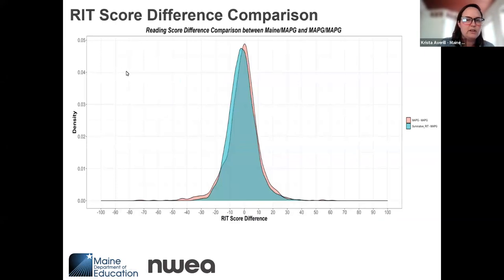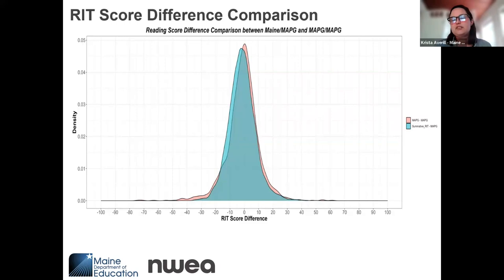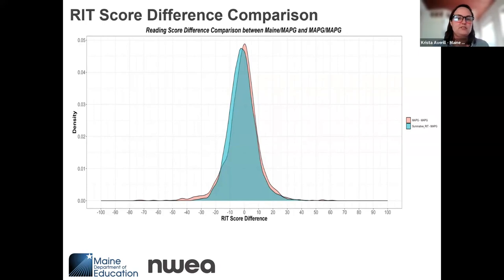Here is information shared by NWEA: a RIT score difference comparison for reading between students who took MAP Growth twice versus students who took both the Three-Year Assessment and MAP Growth. The pink bell curve — partially hidden behind the blue — shows differences for students taking MAP Growth twice, based on national data from 6.7 million students. The blue bell curve shows Maine students who took both assessments. We see a slight shift to the left, reflective in part of the extreme values for high school that need to be addressed.